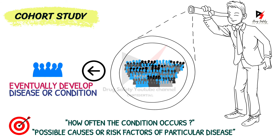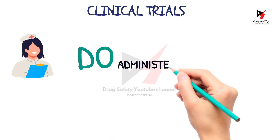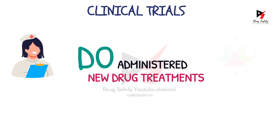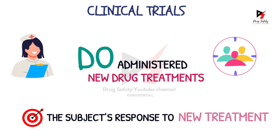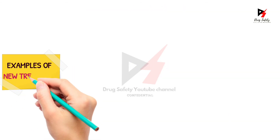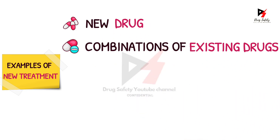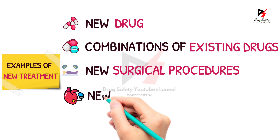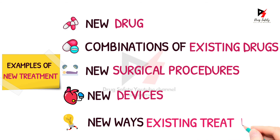Now coming to the next type of clinical research, which is clinical trials. In clinical trials, researchers do administer new drug treatments to the subjects enrolled in the study, and the conclusion of clinical trials is derived based on the subject's response to the new treatment. Treatments provided in clinical trials might be new drugs, combinations of existing drugs, new surgical procedures, new devices, or new ways to use existing treatments.